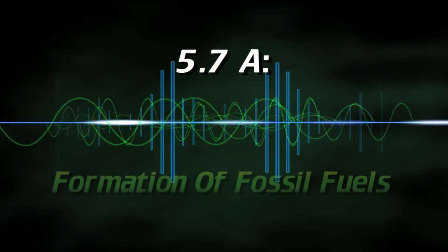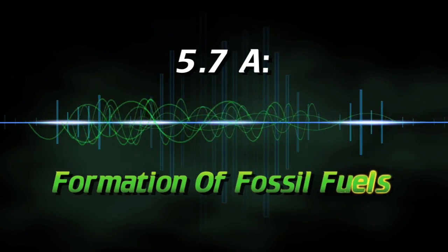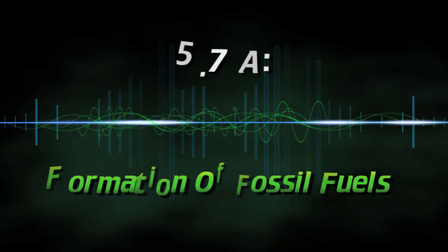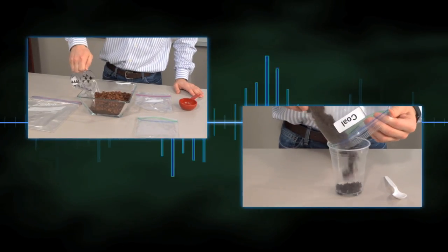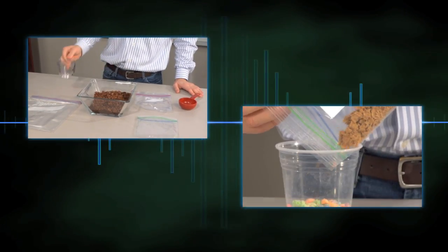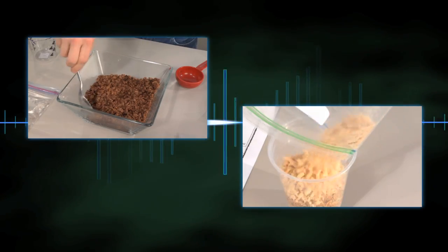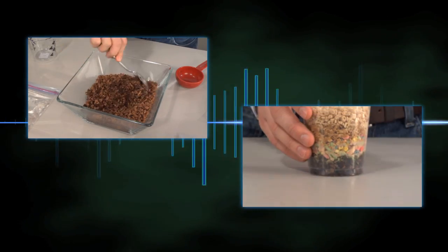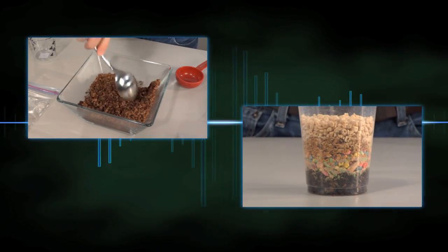5.7A Formation of Fossil Fuels. In this activity, students use cereals to explore the processes that led to the formation of sedimentary rocks and fossil fuels.